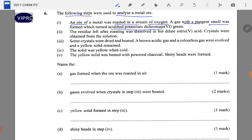Next, the residue left after roasting was dissolved in hot nitric acid and crystals were obtained from the solution. Some crystals were dried and heated, producing a brown acidic gas - nitrogen dioxide (NO2) from nitric acid - a colorless gas (oxygen), and a yellow solid remained. The solid was yellow when cold.